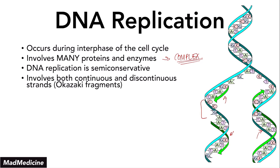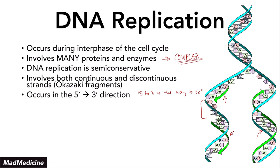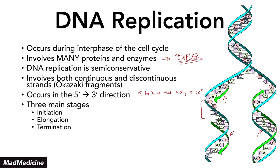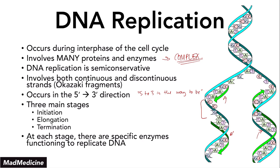DNA replication will always occur in the 5' to the 3' direction. How do I remember that? '5 to 3 is the way to be' — okay, that's a dumb mnemonic, but enjoy it. There are three main stages to DNA replication: initiation, elongation, and termination phases. At each stage, there are specific enzymes that are functioning and they have specific actions that they are doing to replicate the DNA.